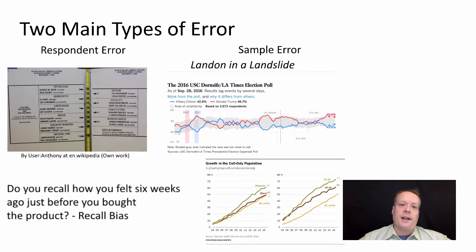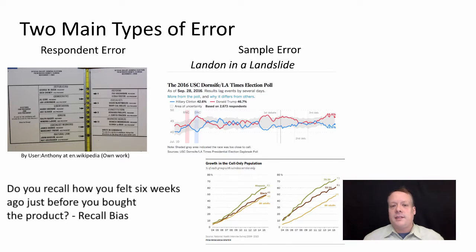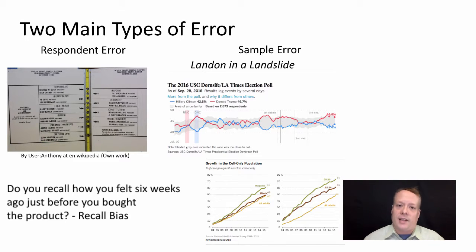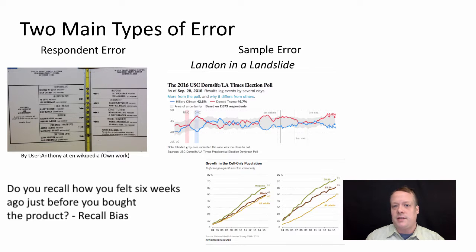Another type of error in the respondent error category is recall bias. If I ask you how you felt six weeks ago just before you bought a product, you're so distant from that experience that you'll create a new memory of what you felt that may not align with how you actually felt — and that changes the results you present. One solution is to conduct your research immediately after something like a purchase event.